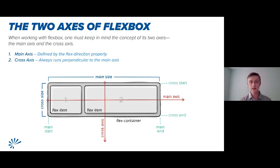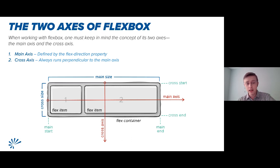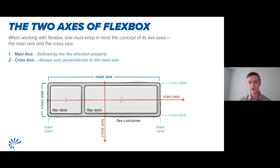Now we'll get into some of the basics of Flexbox, beginning with the two axes. When working with Flexbox, you must keep in mind its two axes: the main axis and the cross axis. The main axis is always defined by the flex-direction property assigned to the element. The cross axis is always perpendicular to the main axis. We'll come back and reference this graphic as we go forward — it's fundamental to understanding how Flexbox works and being able to predict how things will behave.